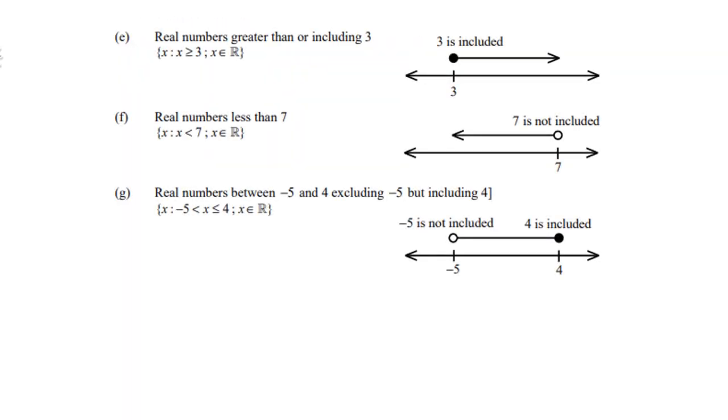Let's look at e, f, and g. All three deal with real numbers, so you'll notice they are different from the previous. Here we have continuous lines because we're dealing with real numbers. That means we include fractions. So if x ≥ 3, you have a dark dot because you include 3, and then a continuous line to the right with an arrow, meaning infinity.